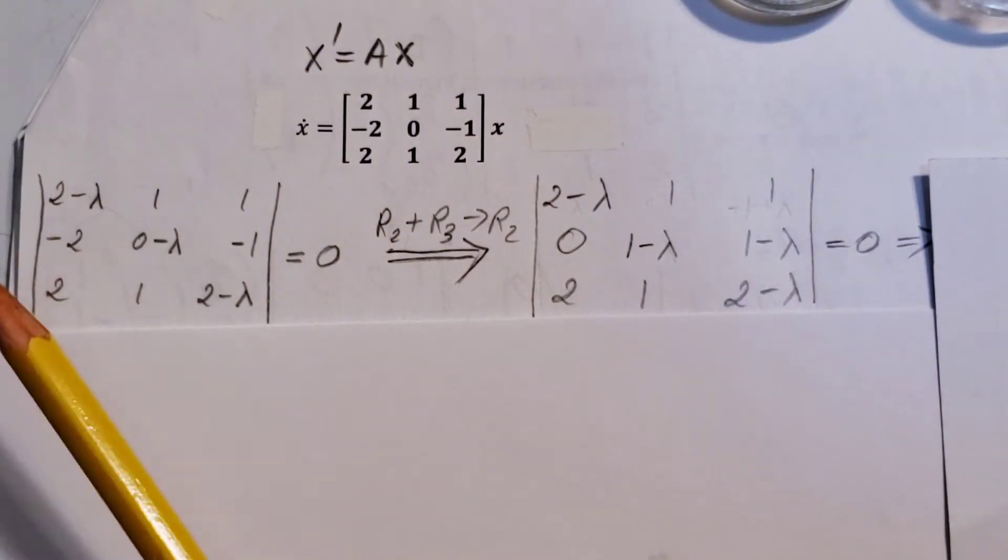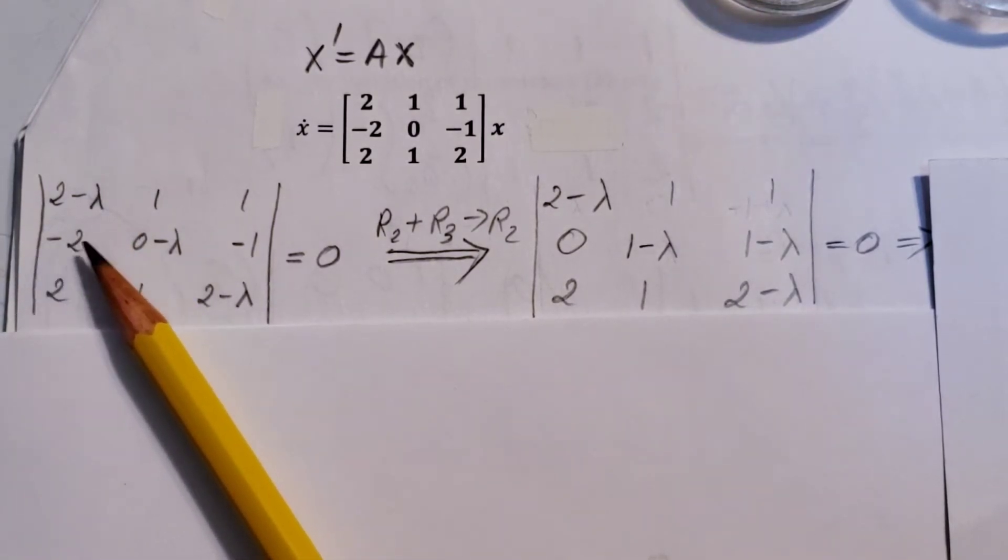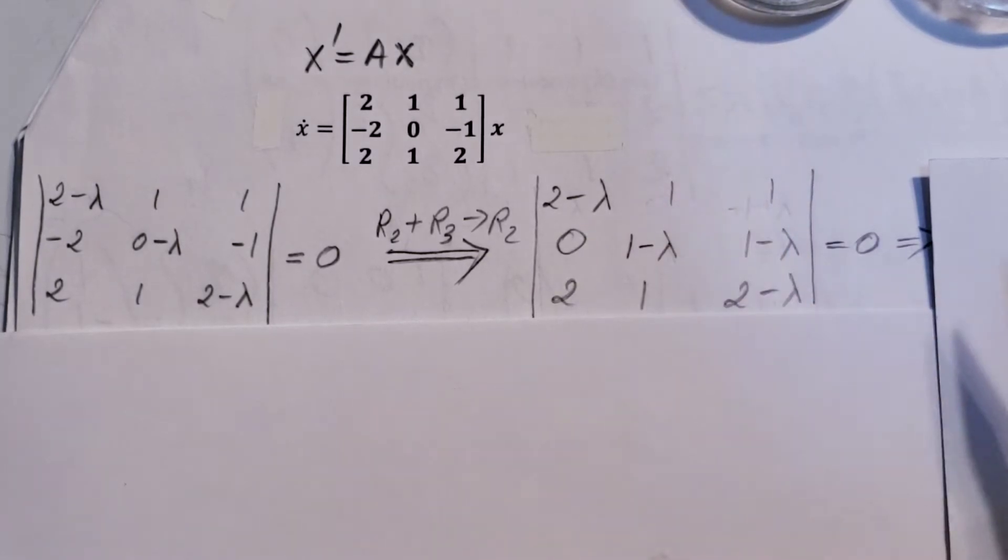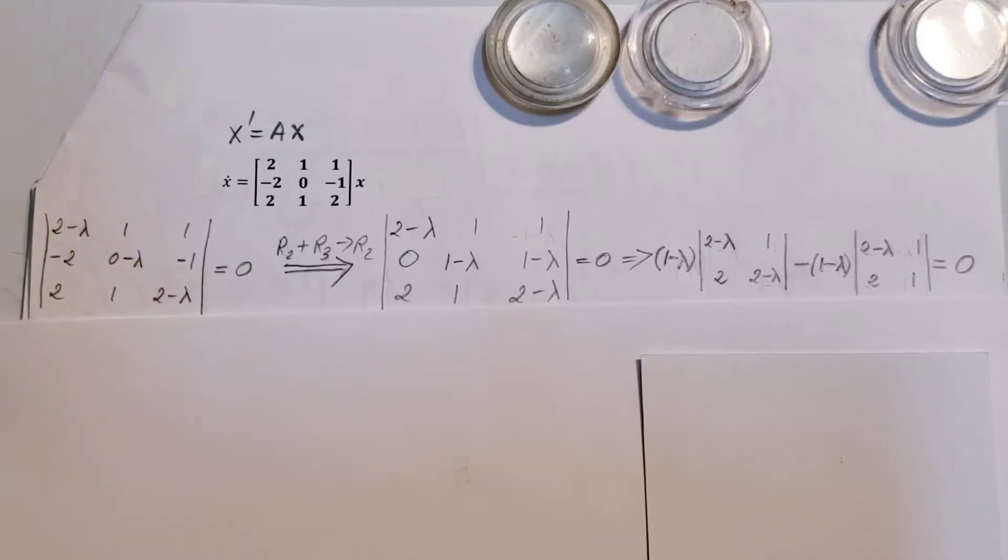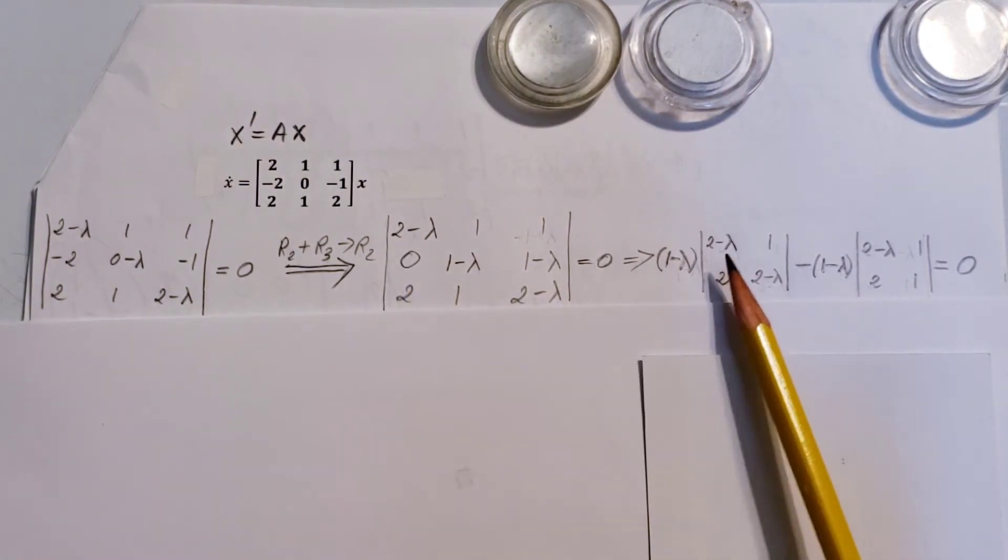Now I'm going to take the second row, add it to the third one, and write it in place of the second one. That's what we can see here. Now we found that we have a 0 here, therefore it will be easy to reduce this.